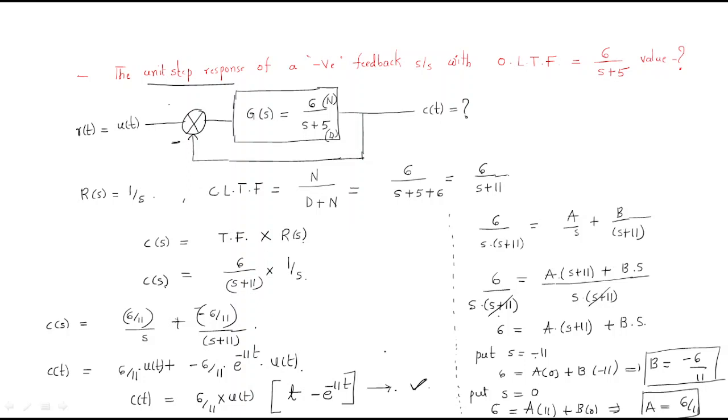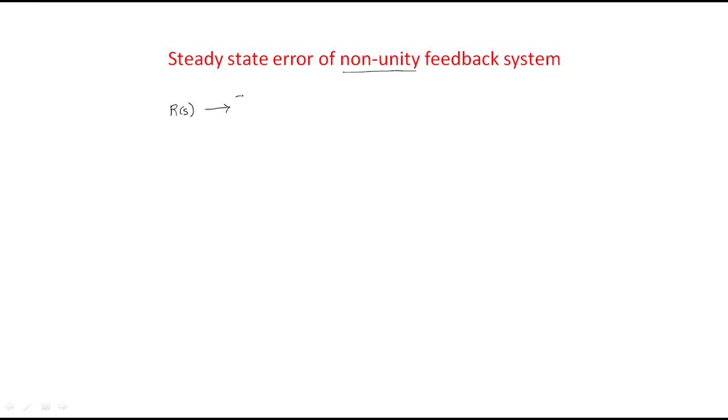The next topic is the steady-state error of a non-unity feedback system. Up to now we discussed steady-state error for unity feedback systems only. If there is a non-unity feedback, we need to discuss how to calculate the steady-state error. The system has input R(s) applied to a summation point and then to G(s).